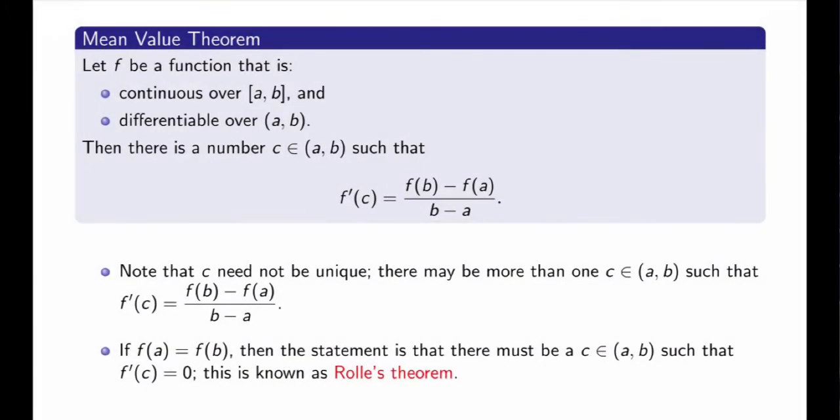Let me now formalize this statement mathematically. Let f be a function that is continuous over the closed interval between a and b, and differentiable over the open interval between a and b. Then the mean value theorem states that there is a number c between a and b such that the derivative of the function at c is exactly equal to the difference quotient of that function between a and b.